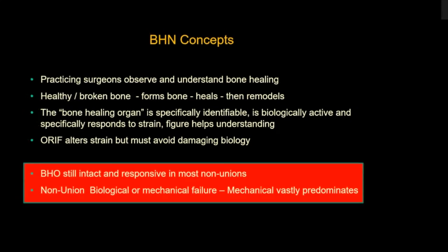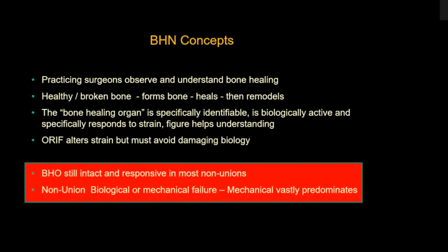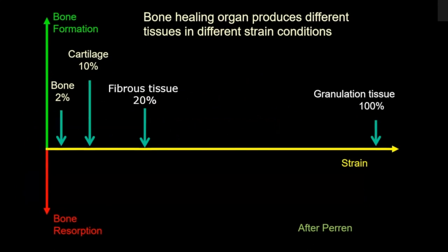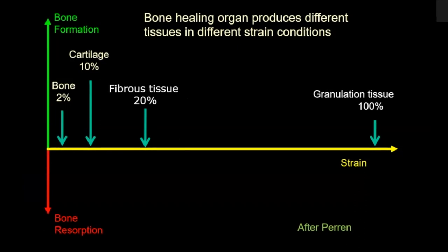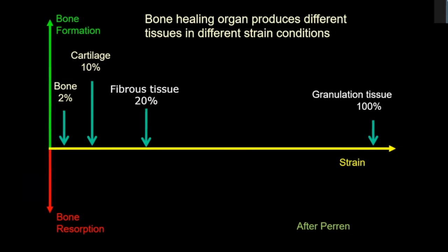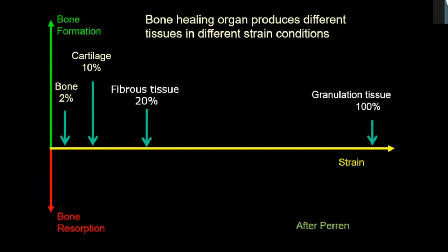The whole concept follows Perren's understanding of how different tissues form with different degrees of strain. If you apply high strain to tissue, granulation tissue will form — 100%, meaning a tissue lengthening by its whole length, getting twice as long. As the strain goes down, different tissues can form: fibrous tissue at 20%, cartilage can lengthen 10%, and bone, if it can lengthen at all, can lengthen no more than 2%. Above 2% strain, bone cannot be formed.